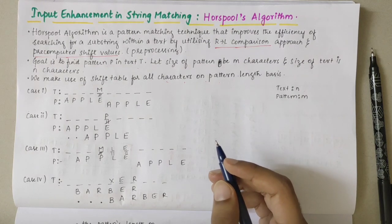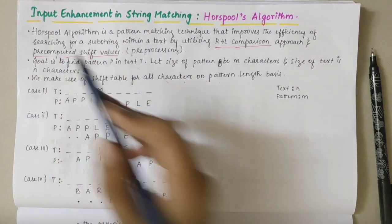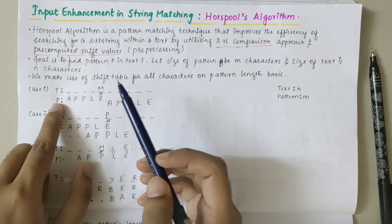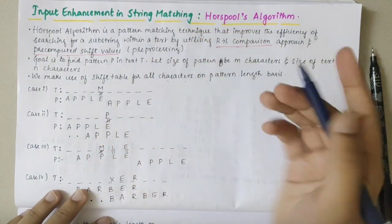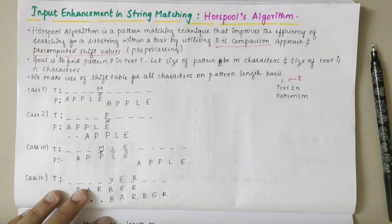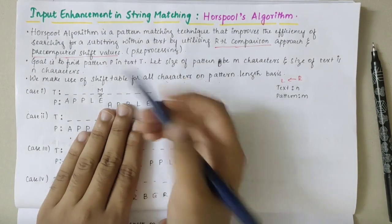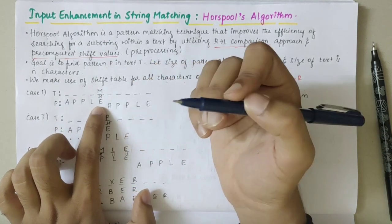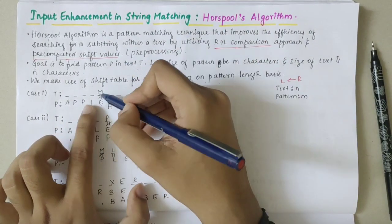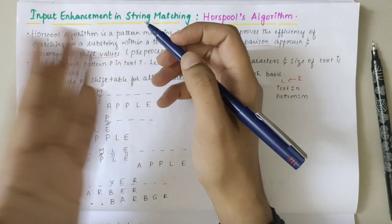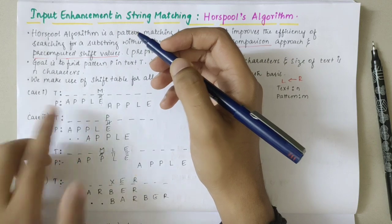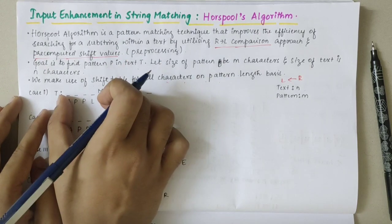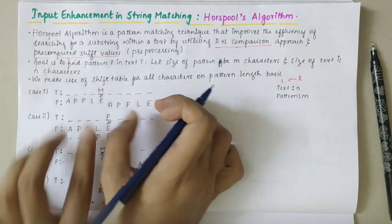There are four rules which need to be followed for shifting. The first rule says that in the text string and pattern, we always start comparing from right to left. For example, with pattern 'apple' and some text, I start from E on the right. E and M are not the same, so I check if M occurs anywhere in the left-hand side of the pattern. M is not occurring anywhere, so in this case, we shift the entire pattern length and start from the next position.